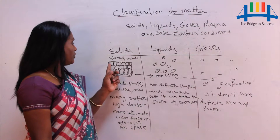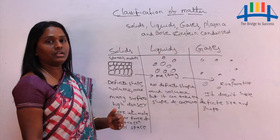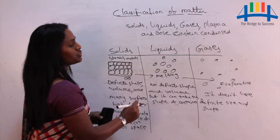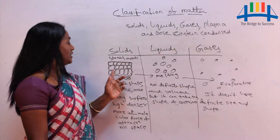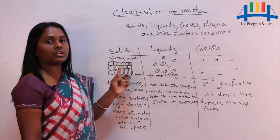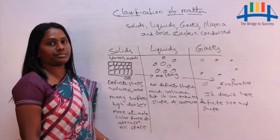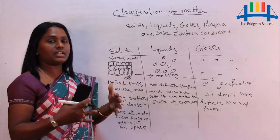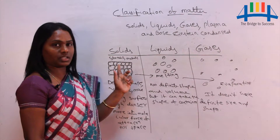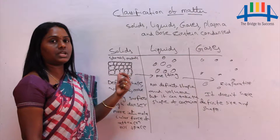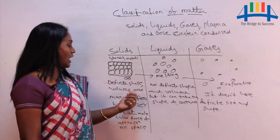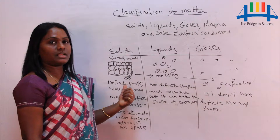Intermolecular space means the space present between the molecules or particles. The space present between two particles is called intermolecular space — 'inter' means in between. In solids, there is nil intermolecular space. When there is nil intermolecular space, the intermolecular force of attraction is very high. Due to this property, solids have a definite shape, size, and mass.